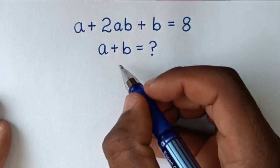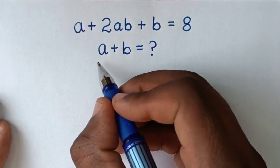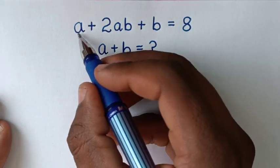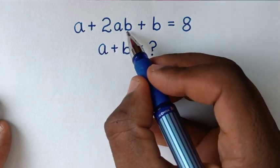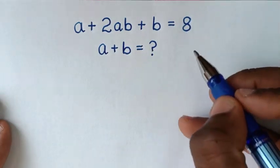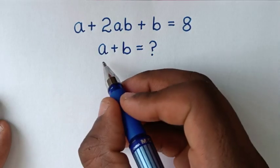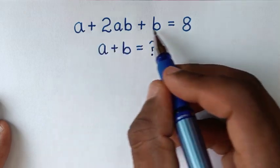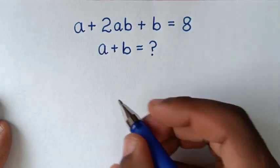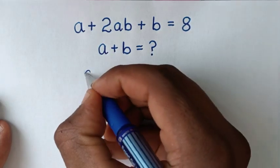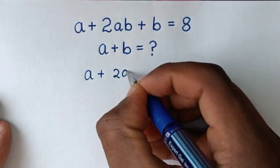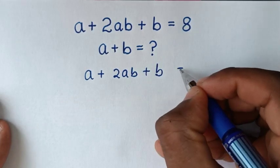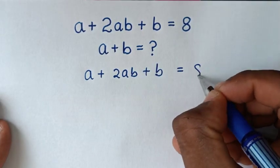Hello, you are welcome to solve this math problem, which is a plus 2ab plus b is equal to 8. We need to find the values of a plus b from this equation.